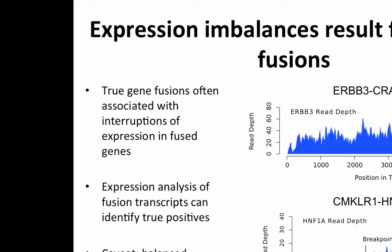Looking at expression, we can examine not only whether the 3' gene is highly expressed but also whether expression is interrupted. A large discontinuity in expression across one of the genes for which we've predicted a fusion is informative. For instance, in HNF1A, expression starts right at the breakpoint predicted from the mRNA-seq. Before this breakpoint, there's pretty much no expression of the 5' exons, probably because only the fusion version of HNF1A is being expressed, and the fusion version only contains the last 3' exons after the breakpoint.